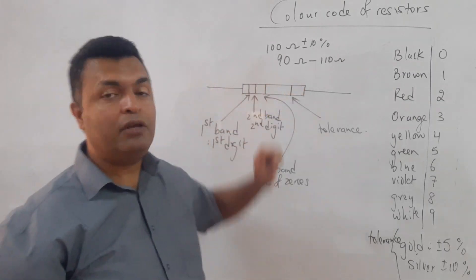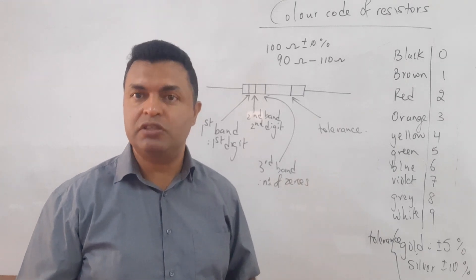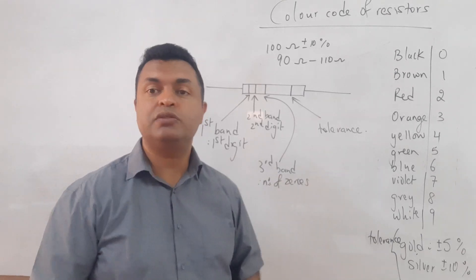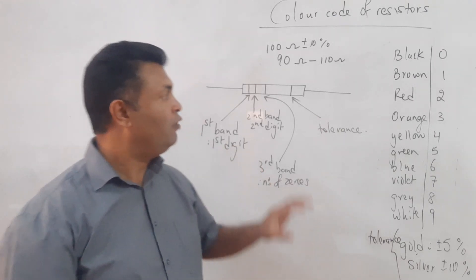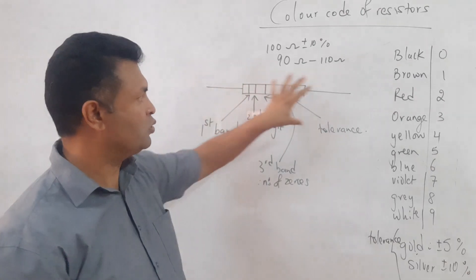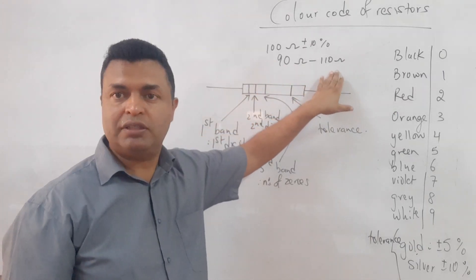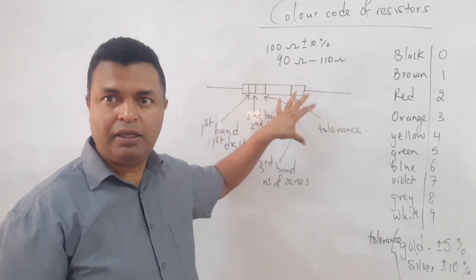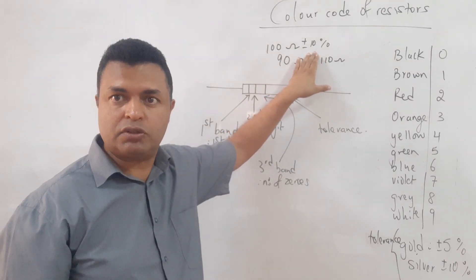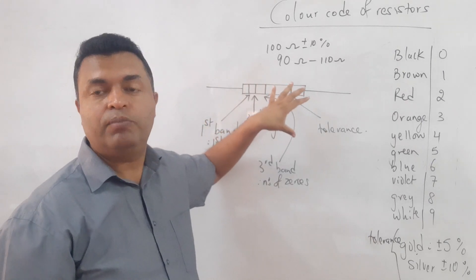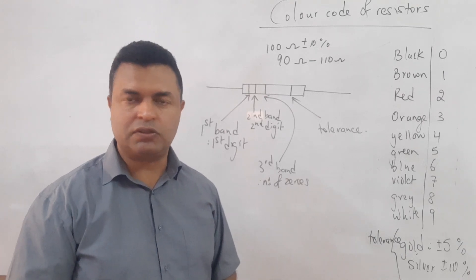If I check the value using an ohm meter — which measures resistance — and place it across this resistor, it can give me any value between 90 ohms and 110 ohms and it will still be valid, because the color band represents a 10% tolerance.